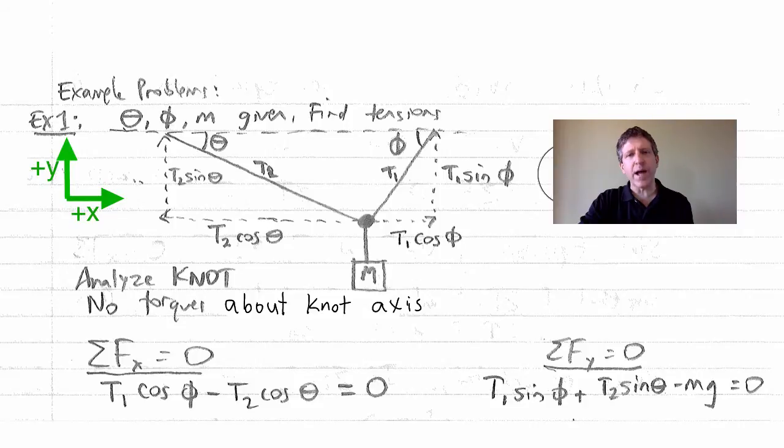You could analyze this about any axis that you want, but in this situation, there are no torques about this knot axis. So we actually, we could analyze this about this axis or this axis or many other axes, but if we analyze it about this, really there's no torques acting at all on this knot.